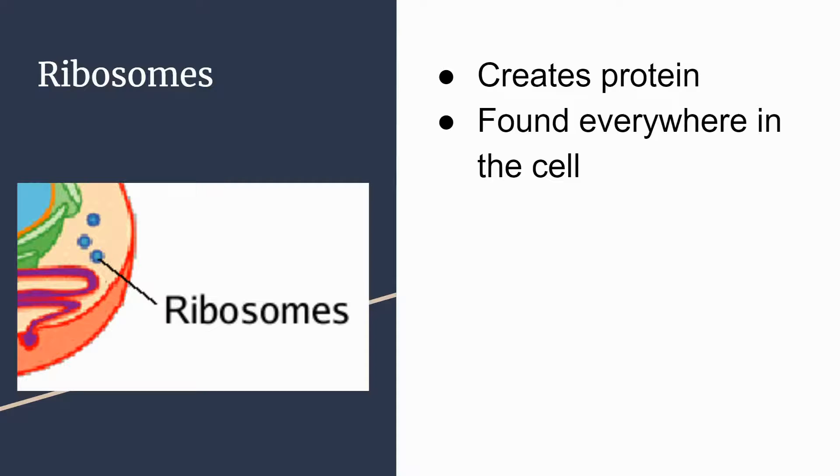Ribosomes are molecules that create proteins by decoding the RNA sent from the nucleus. This process is known as protein synthesis, and they can be found almost anywhere inside the cell since they are used by a lot of other organelles, such as the endoplasmic reticulum.